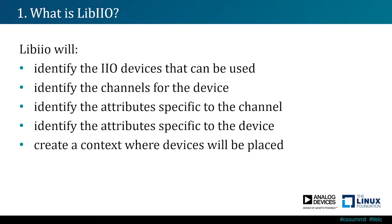LibIIO will do the following steps: it will identify the devices that can be used, then identify the channels that belong to each device and their direction, whether they work with the buffer or not, then assign specific attributes for the channels and the device. Then it will create a context, which is like a place where all devices will exist and where you can browse through the devices, channels, and all the attributes.